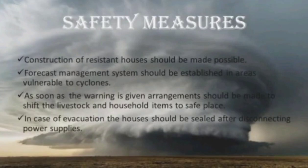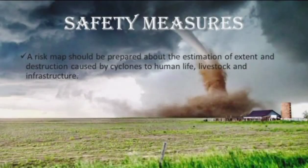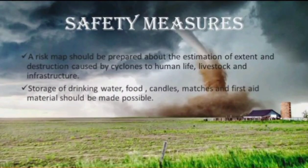As soon as the warning is given, arrangements should be made to shift the livestock and household items to a safe place. In case of evacuation, houses should be sealed after disconnecting power supplies. A risk map should be prepared about the estimation of the extent and destruction caused by cyclones to human life, livestock and infrastructure.